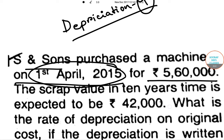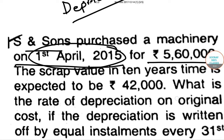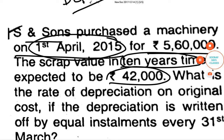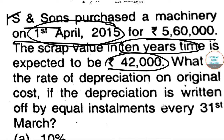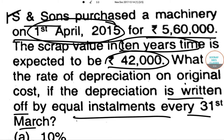Your starting year has an asset acquired for ₹5,60,000. The scrap value in 10 years time — 10 years is the useful life we have given. The expected scrap value is ₹42,000. What is the rate of depreciation on original cost if the depreciation is written off by equal installments every 31st March?